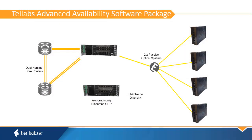The Telleb's Advanced Availability software package provides the ability to establish PON protection groups across redundant OLTs. This allows customers to create redundancy in the PON downlink to the splitter, thus protecting against OLT, PON card, PON port, or PON fiber route failure. With this hardware configuration, the optical LAN system can achieve an extremely high rate of availability.